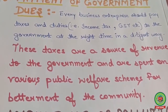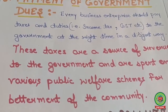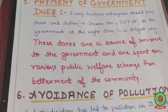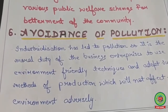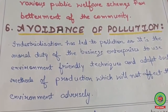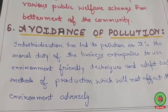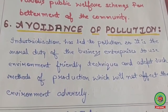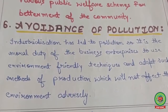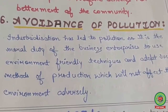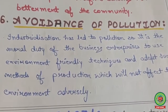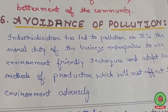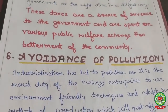It is the responsibility of the business to show an accurate picture of income to the income tax department and to pay taxes on time. The next social objective is avoidance of pollution. Industrialization has led to pollution, so it is the moral duty of business enterprises to use environment-friendly techniques and adopt methods of production that will not adversely affect the environment. Measures include installing low-flame fixtures, purchasing energy-efficient equipment, and using electronic chimneys.